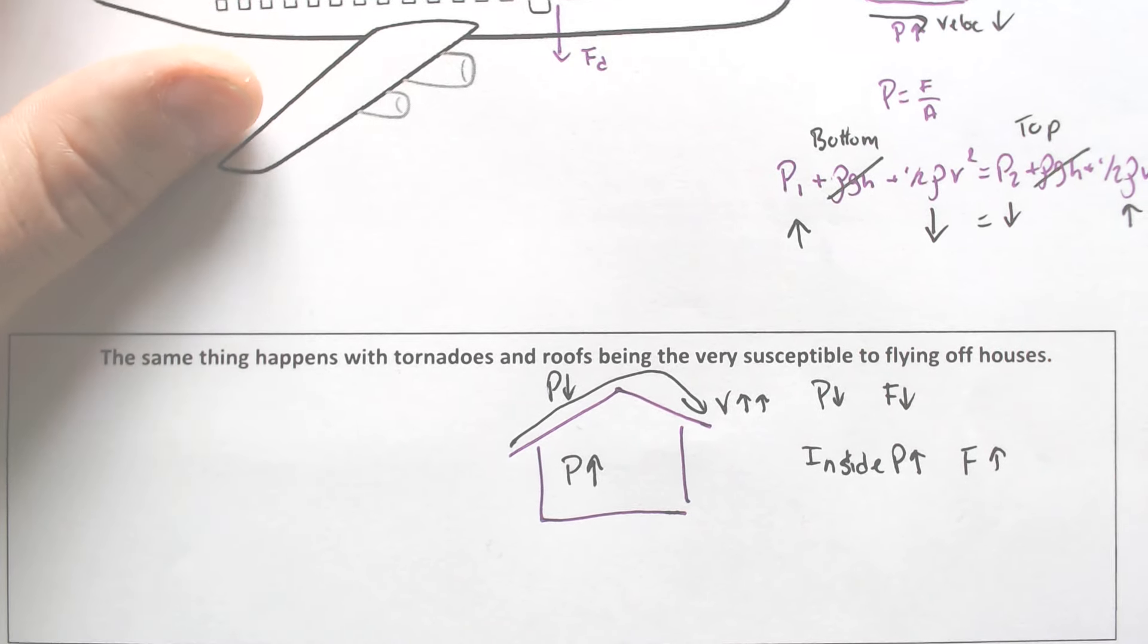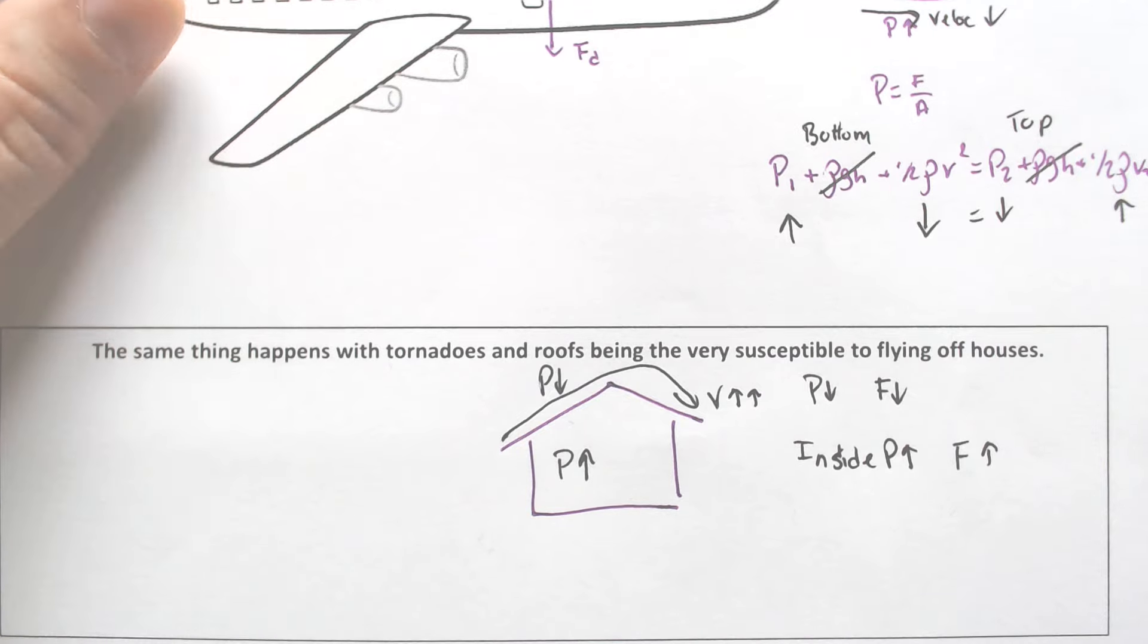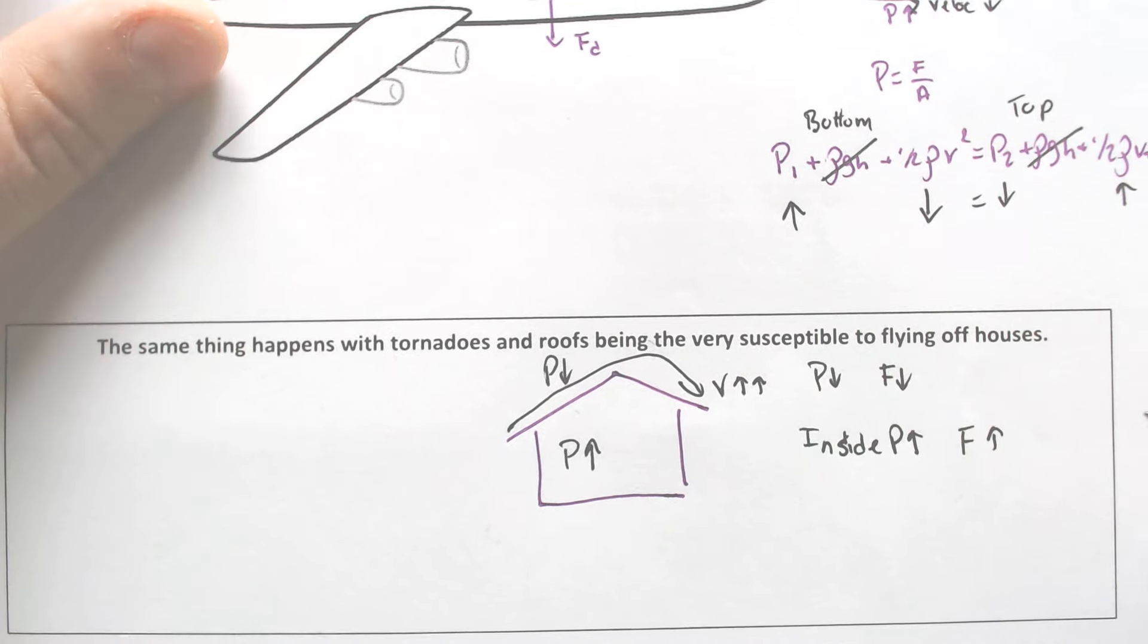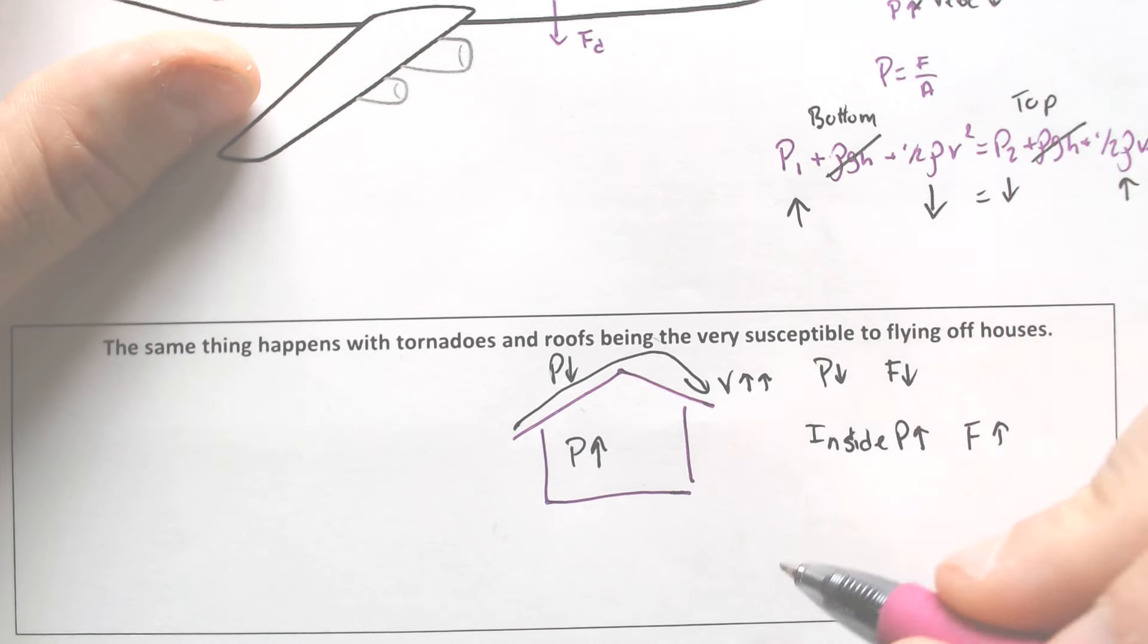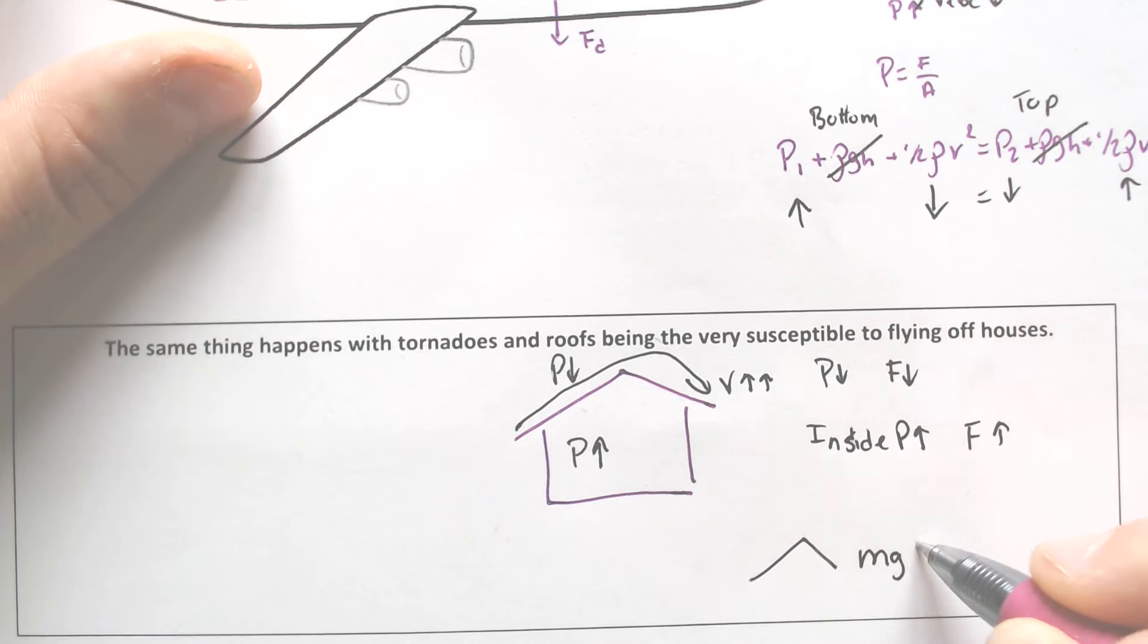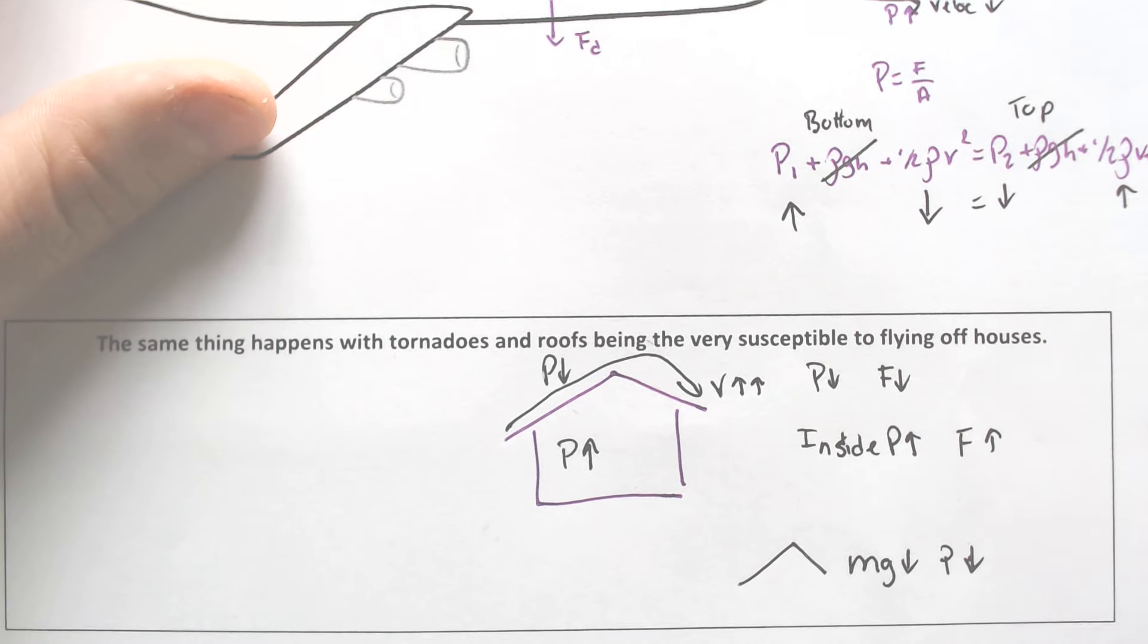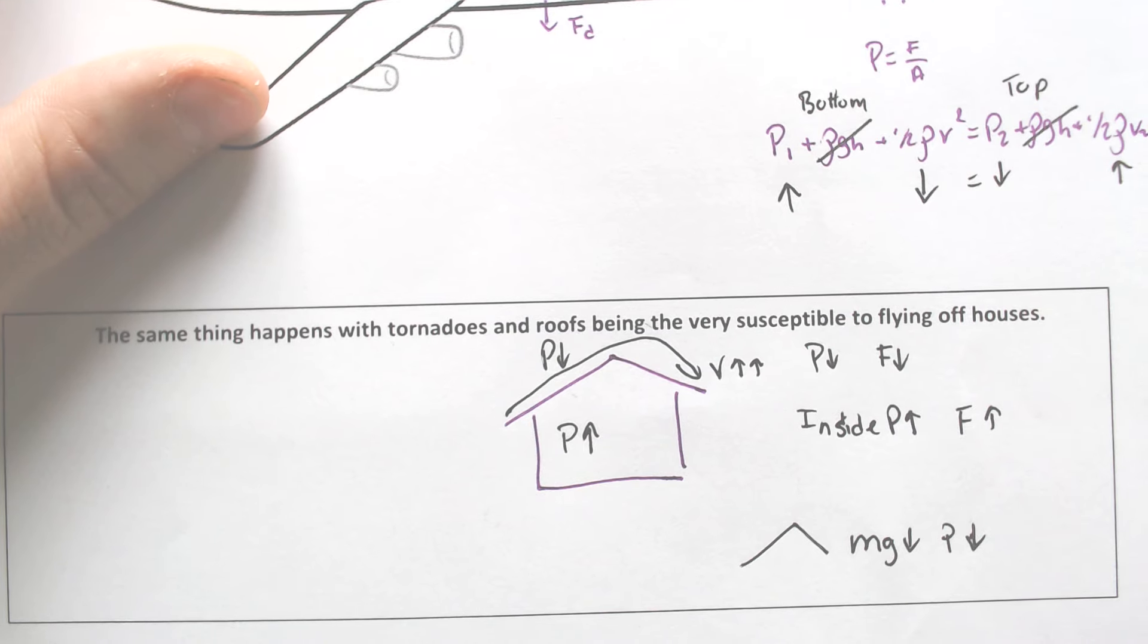And it actually ends up being more than the overall weight of the roof, because technically there's a few forces happening here. We would have the weight of the roof itself. We would have mg going down. And then we would have the pressure, which would also be going, like the force of pressure would also be going in the downward direction for the free body diagram.